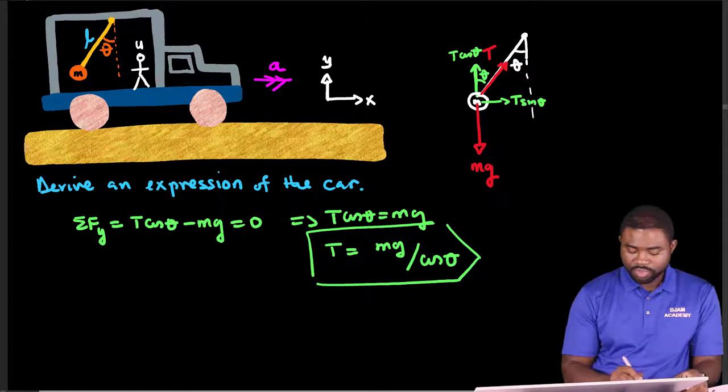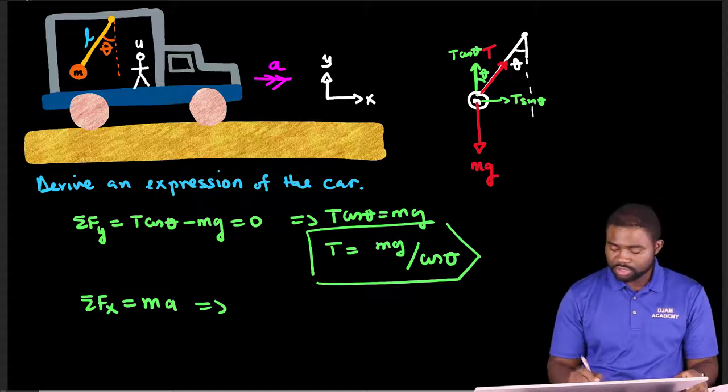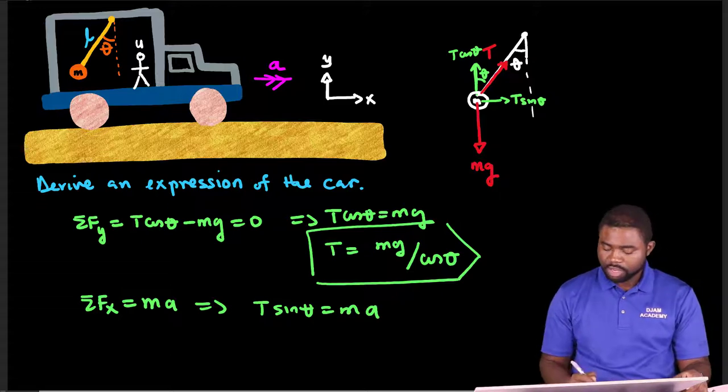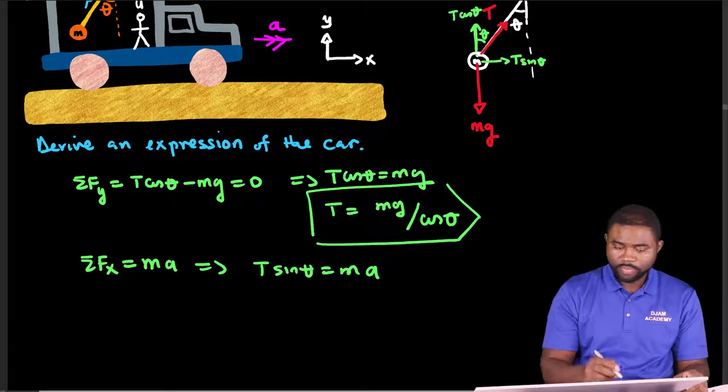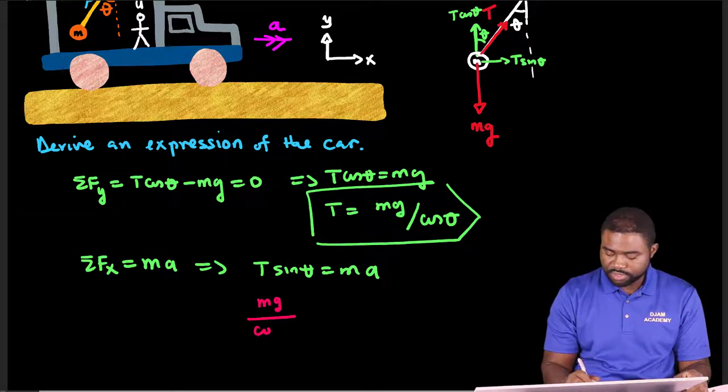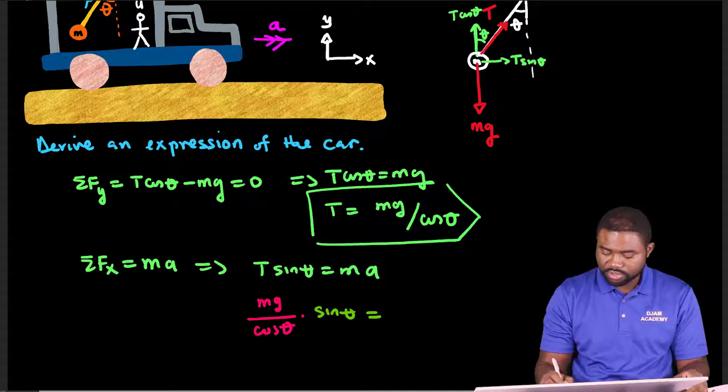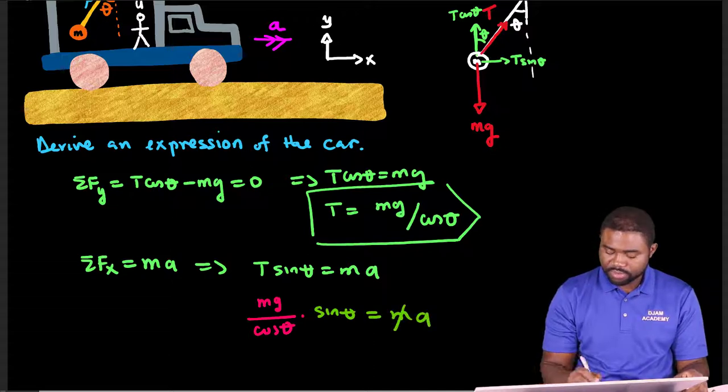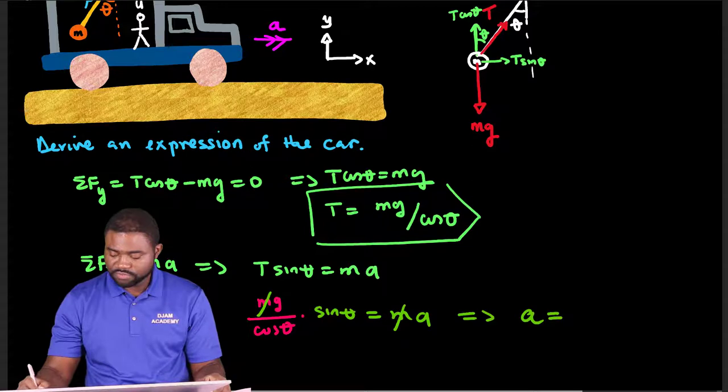Now on the other hand, the sum of forces along the x direction is equal to ma, which would mean that T sine theta is equal to ma. But what is T? T is mg divided by cosine theta, and we are multiplying this by sine theta all equal to ma. The m's can gloriously cancel. Sine over cosine is tangent. So this implies that the acceleration of the car is given by g times the tangent of theta.